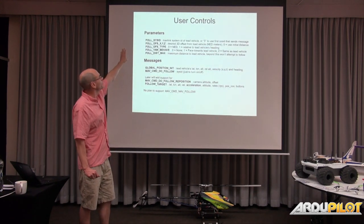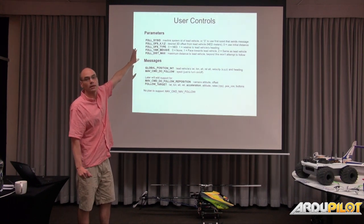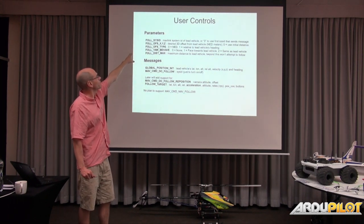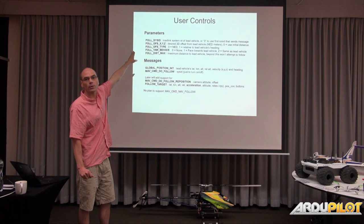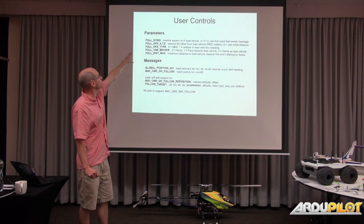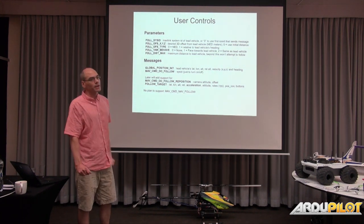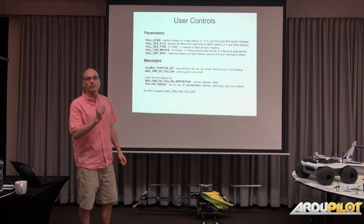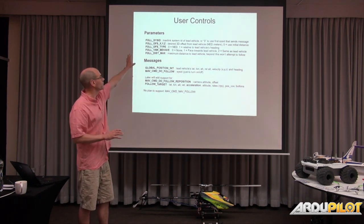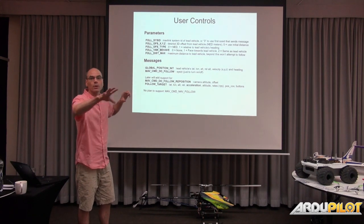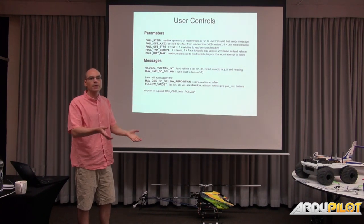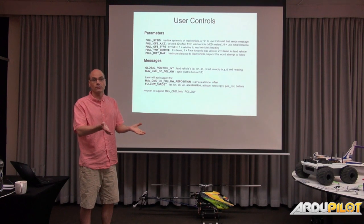This slide shows some of the controls you get. At the top we have a System ID — all our parameters usually start with a subsystem name, so in this case it's FOLL. You can put in the MAVLink system ID of the lead vehicle. These parameters are on the following vehicles. If you leave it at zero, it'll connect to the first vehicle that it sees.